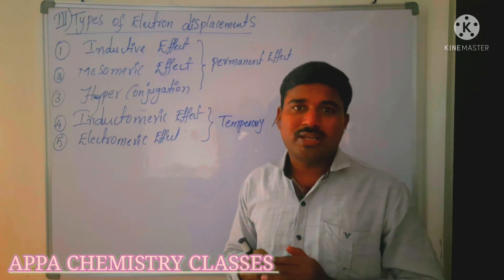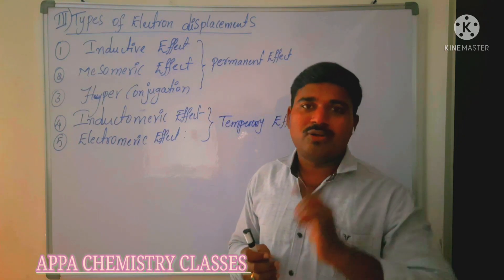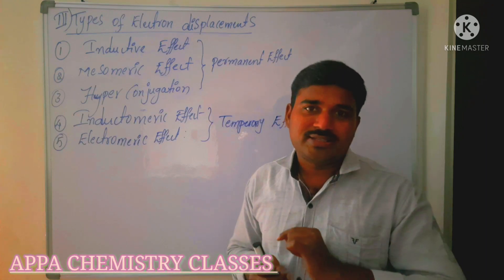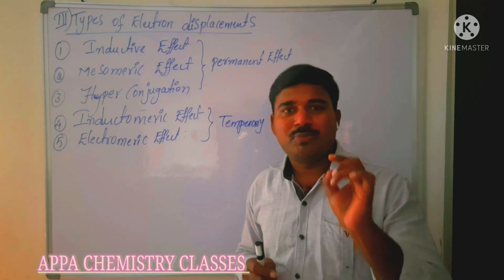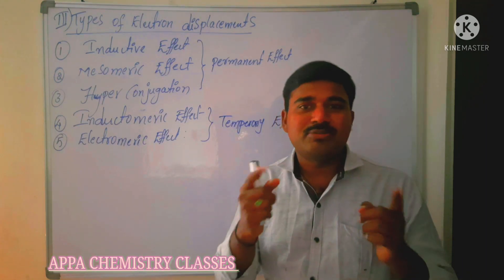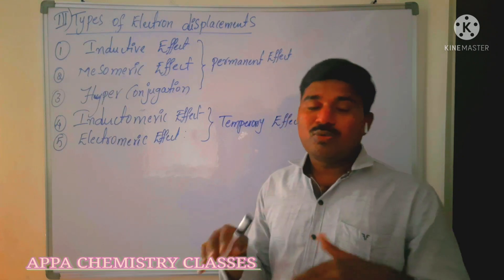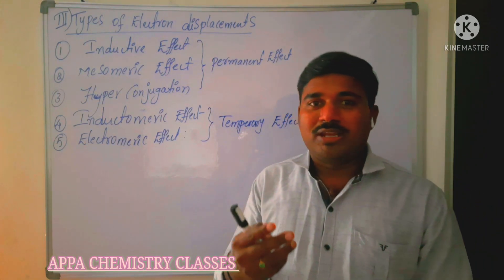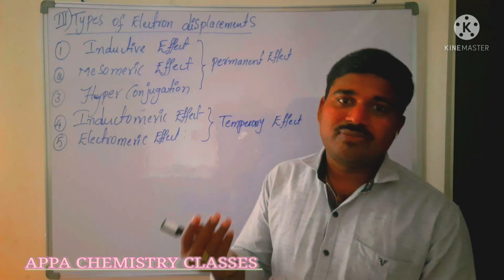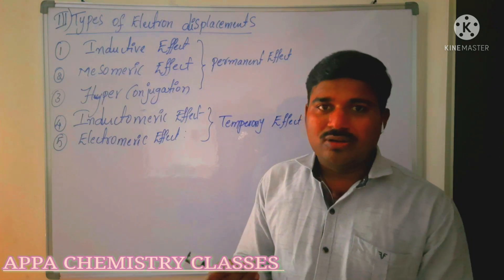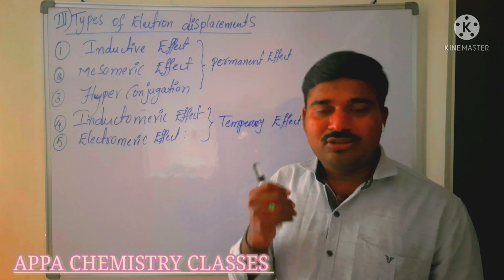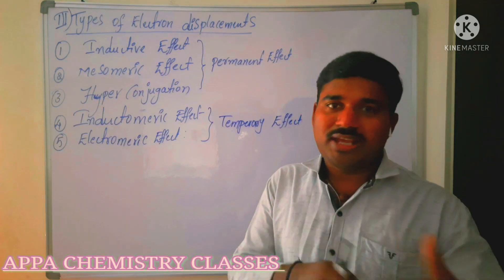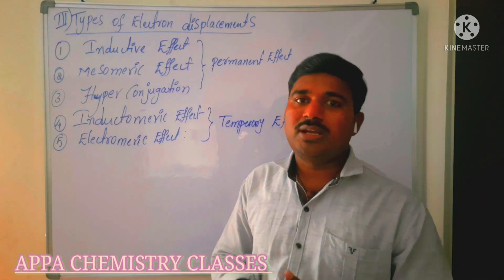That was part one. Part two covered the types of attacking reagents — mainly three types: free radicals, electrophilic attacking reagents, and nucleophilic attacking reagents. Part two is now complete.